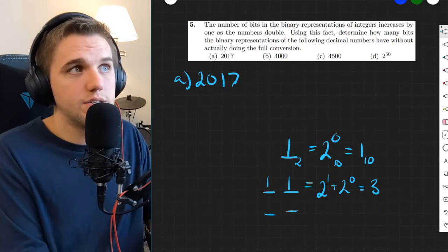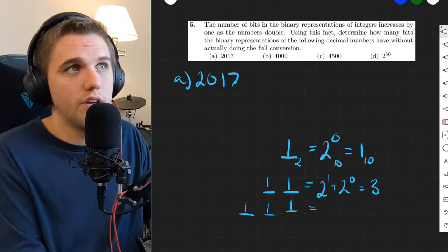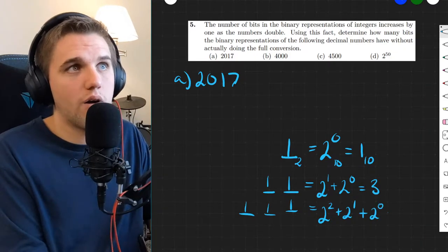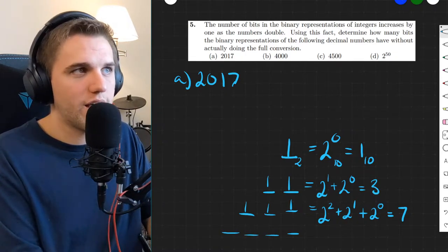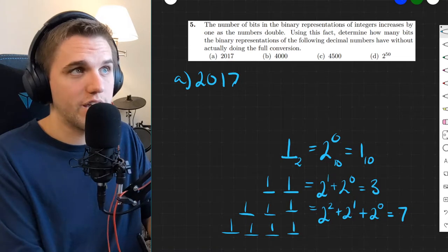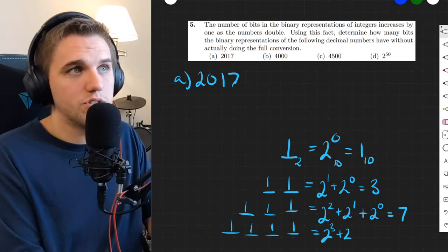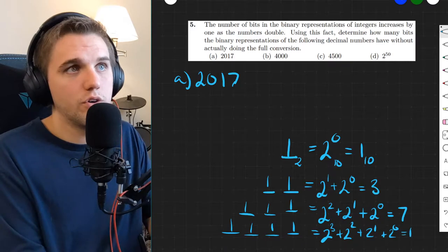What about three bits? That would be if we use one in all the placeholders, so that's two squared plus two to the one plus two to the zeroth power, which is seven. What about four bits? That would be if we have ones in all of our placeholders again, which is two cubed plus two squared plus two to the one plus two to the zero, which is 15.